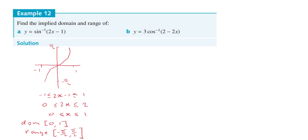Okay, the second one here is a little bit trickier. You've got y = 3cos⁻¹(2 - 2x). So what we can say is for cos⁻¹, maybe I'll draw my cos⁻¹ graph first. Now this is your unshifted cos⁻¹ graph.